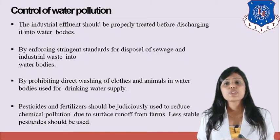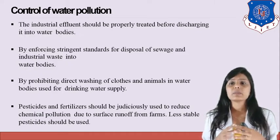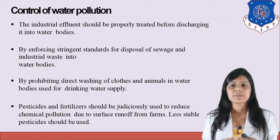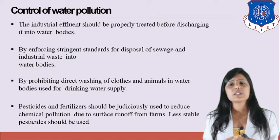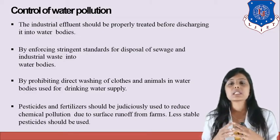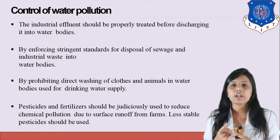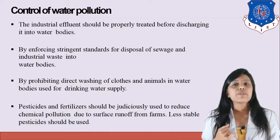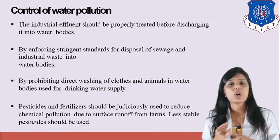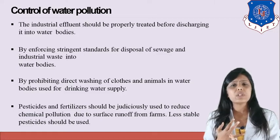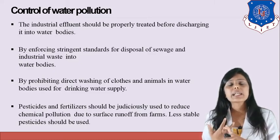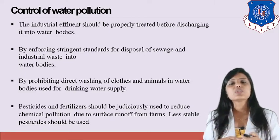Water pollution can also be controlled by properly treating industrial effluents before discharging into water bodies, by enforcing stringent standards for disposal of sewage and industrial waste into water bodies, by prohibiting direct washing of clothes and animals in water bodies used for drinking supply, and by judiciously using pesticides and fertilizers to reduce chemical pollution due to surface runoff from farms, utilizing less stable pesticides.